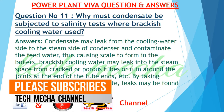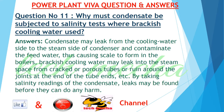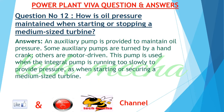Question number 11: Why must condensate be subjected to salinity tests where brackish cooling water is used? Answer: Condensate may leak from the cooling water side to the steam side of the condenser and contaminate the feed water, thus causing scale to form in the boilers. Brackish cooling water may leak into the steam space from cracked or porous tubes, or around the joints at the tube ends. By taking salinity readings of the condensate, leaks may be found before they can do any harm.